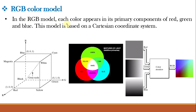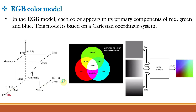The first color model is the RGB color model, where each color appears in the primary spectral components of red, green, and blue. This model is based on a Cartesian coordinate system. The RGB primaries are at the three corners, and the secondary colors cyan, magenta, and yellow are at the other three corners. The three axes X, Y, and Z are red, green, and blue respectively.